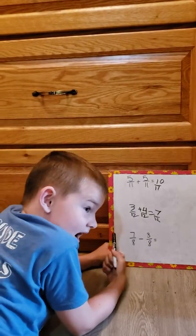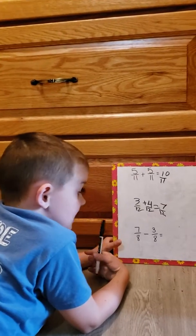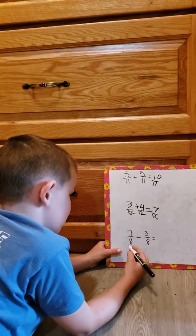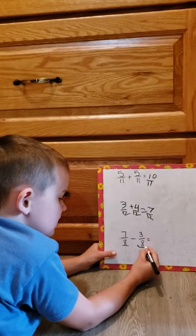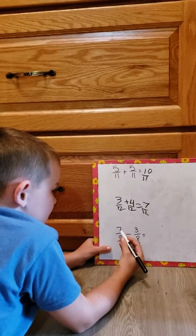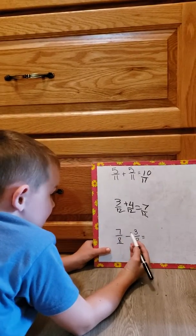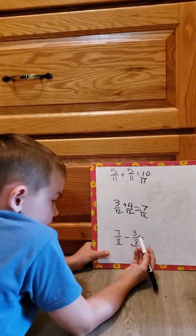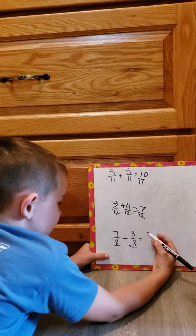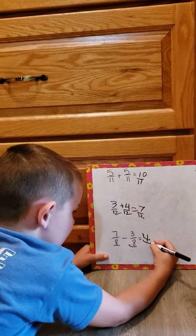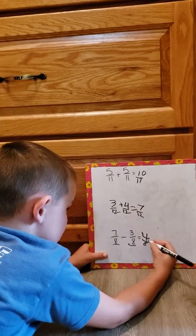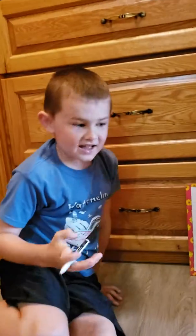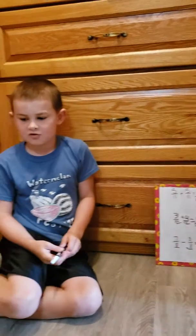And then subtracting is basically the same thing. So with like denominators, all you do is 7 minus 3 - that's all you do, which in this case is 4. So you write down 4/8. That's adding and subtracting like denominator fractions. So bye, everybody!